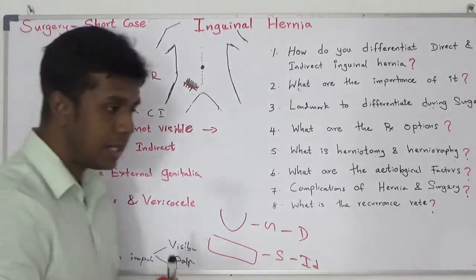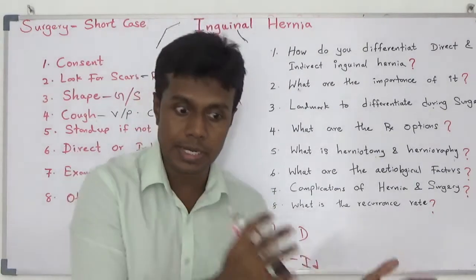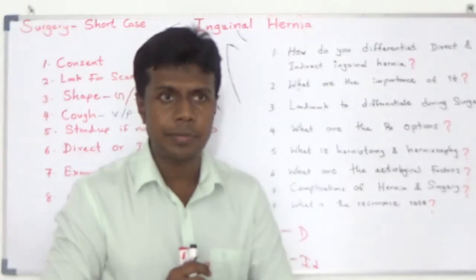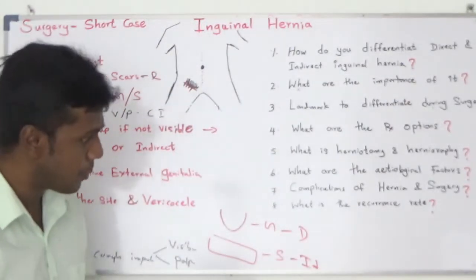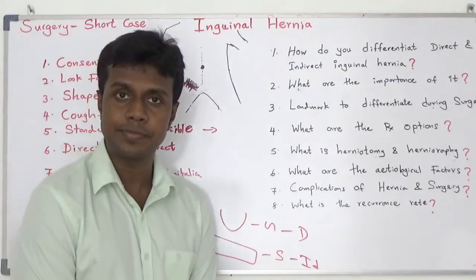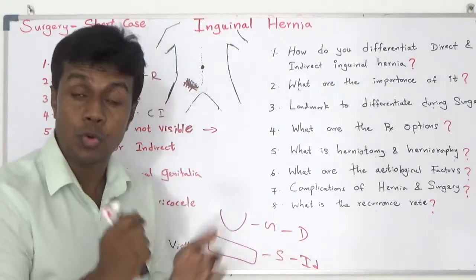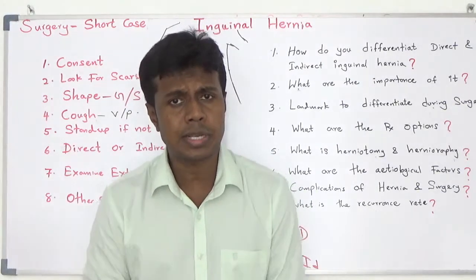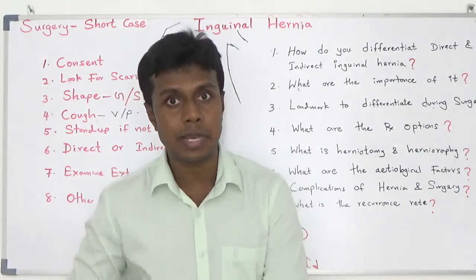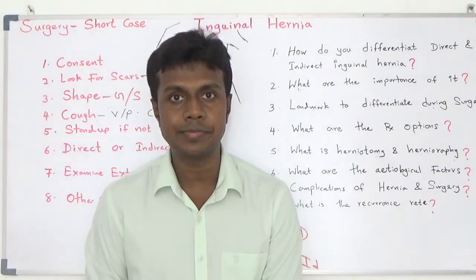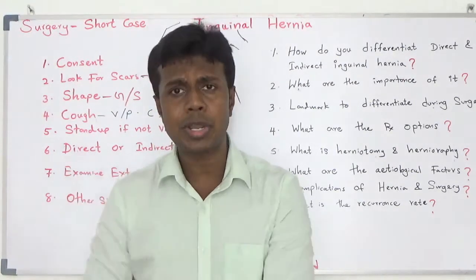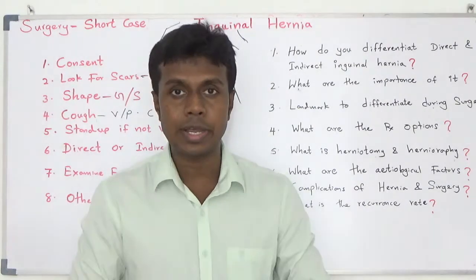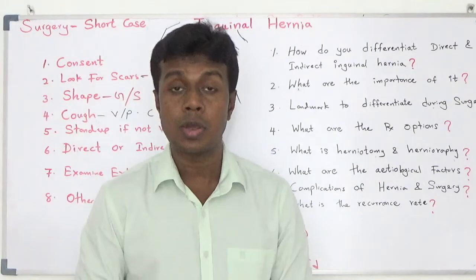Then try to identify whether it is direct or indirect inguinal hernia. You already have a rough idea from the shape. Ask your patient to reduce the hernia back into the abdomen — most patients can reduce it themselves. If the patient can't, ask the examiner: 'Shall I reduce it?' Then try to reduce it.